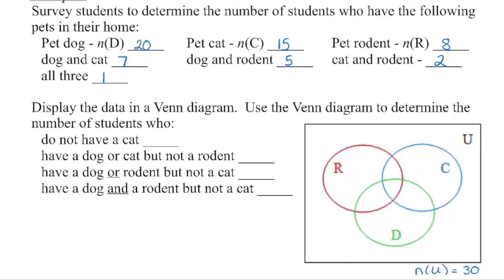Let's pretend we surveyed everyone in the class and we currently have 30 students. 20 have a pet dog, 15 have a pet cat, and 8 have some kind of pet rodent. I've labeled the intersecting circles with those letters. We have 7 students with a dog and cat, 5 students with a dog and rodent, 2 students with a cat and rodent, and 1 student has all 3 pets.